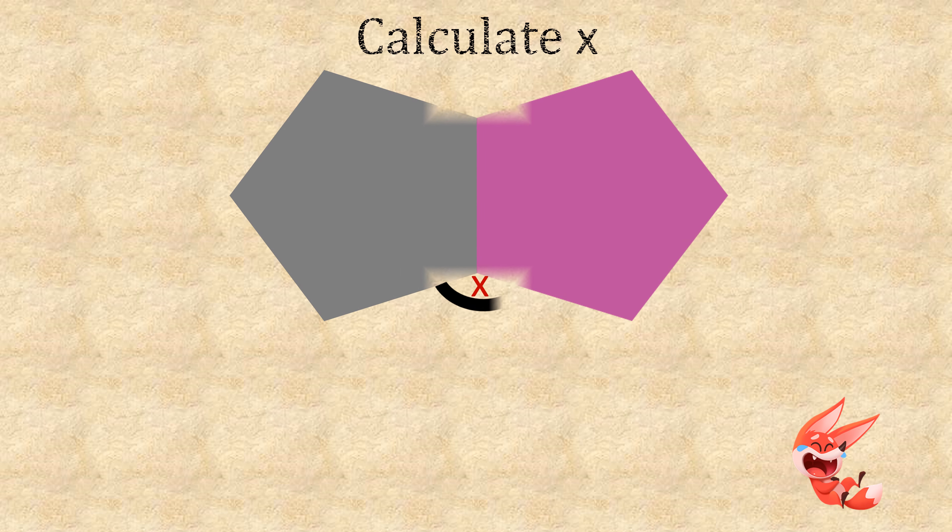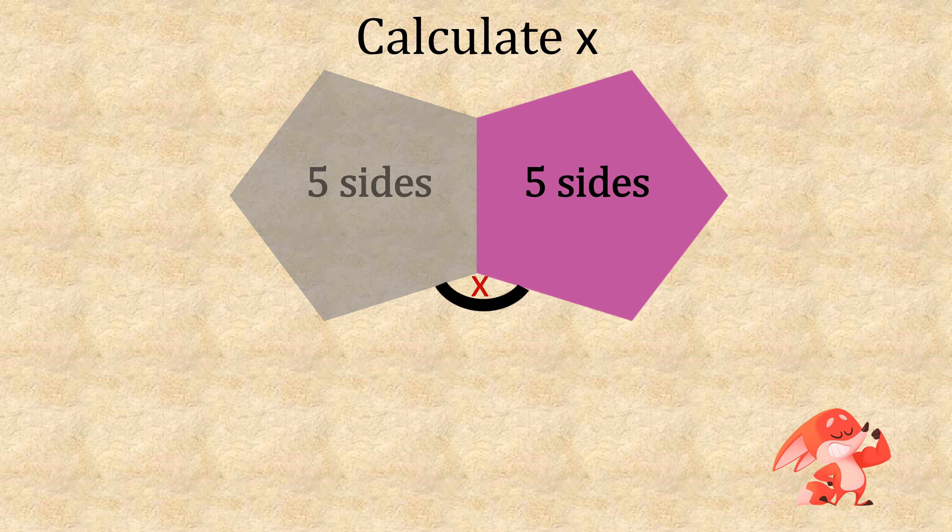You could be asked to calculate x. We've got two polygons which are five-sided pentagons here. So what we need to do: we take our 360 and divide it by the number of sides, which is 5, giving us 72. And as it wants us to calculate two sides, we times them by 2, giving us a total x angle of 144.